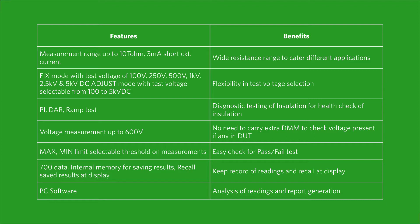PI, DAR, and ramp test for diagnostic testing of insulation for health check of insulation. Voltage measurement up to 600V — hence there is no need to carry an extra DMM to check voltage present in the DUT.